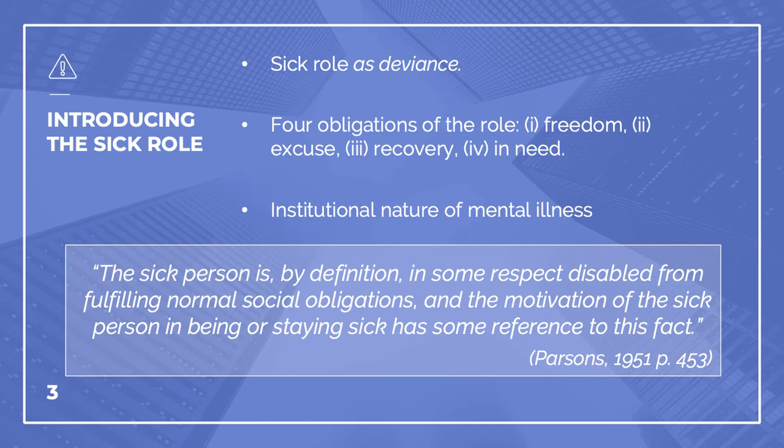We have expectations of fathers, mothers, daughters, or professors, and in adopting the sick role, one takes a deviant role instead. From the piece, the sick person is, by definition, in some respect disabled from fulfilling normal social obligations, and the motivations of the sick person in being or staying sick has some reference to this fact. Parsons says there are strains on existing social relationships in this transition, and that illness as deviant behavior matches, in terms of structural function, other types of deviance that we can document in society.